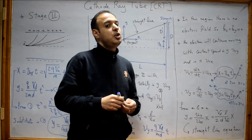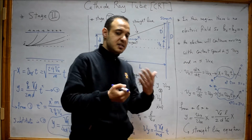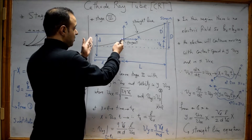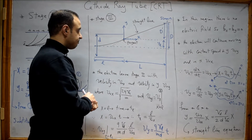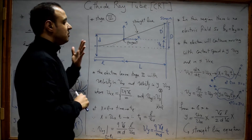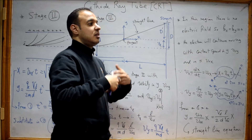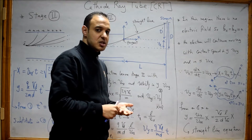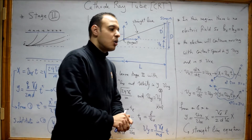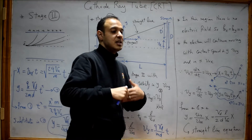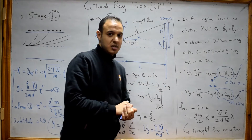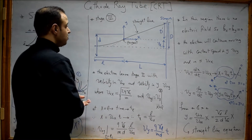In this lecture, we will continue our journey with the electron in the cathode ray tube. Last time, we analyzed the deflection motion between the deflection plates, which is the second stage of the cathode ray tube. We deduced four equations that determine the displacement in x and y directions and the velocity components in x and y directions. And we said that in this lecture, we will determine the motion equation that relates x and y of the electron inside the cathode ray tube in stage 2, between the deflection plates.